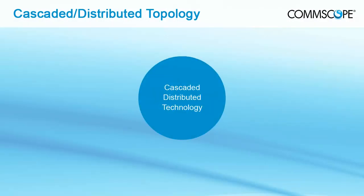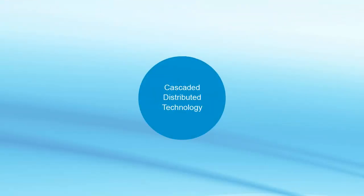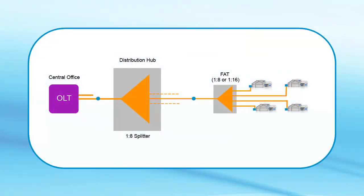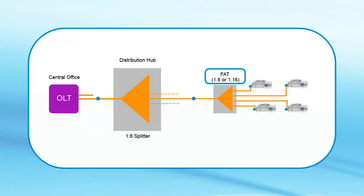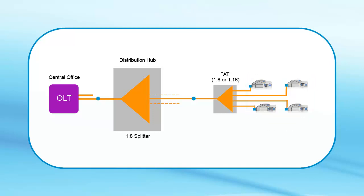Another option is the distributed split architectural model, where the splitters are placed deeper into the network. In most cases, a cascaded or distributed splitter approach has no splitters in the central office, as the OLT port is connected or spliced directly to an outside plant fiber. A first level of splitting — 1-to-4 or 1-to-8 — is installed in a closure not far from the central office, with its input connected to the OLT fiber. A second level of splitters, 1-to-16 or 1-to-8, resides in terminal boxes very close to the customer premises, each splitter covering 8 to 16 homes.